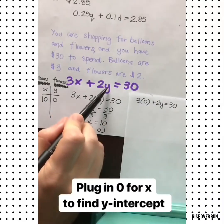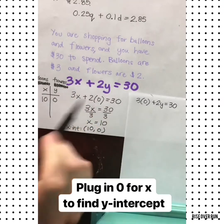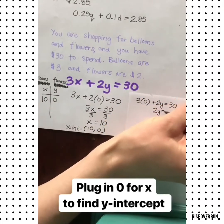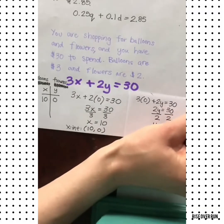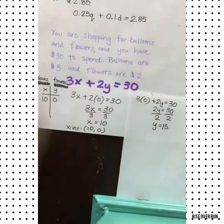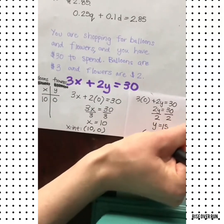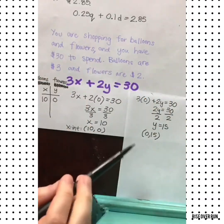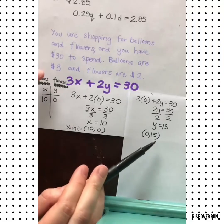Now let's find the Y intercept by plugging in 0 for X. 3 times 0 is 0, so we bring down the 2Y. Divide by 2 and Y equals 15 — that means our Y intercept happens at (0, 15). That's the value when we buy 0 balloons and can buy 15 flowers.